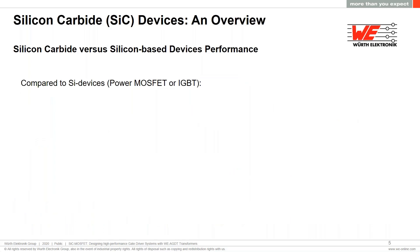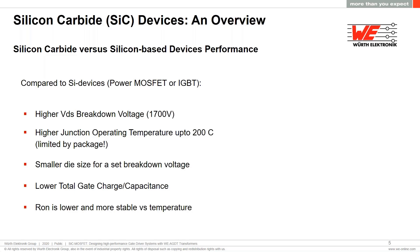How do these superior material properties translate into better semiconductor devices? Silicon carbide MOSFETs feature the highest breakdown voltages up to 1,700 V and are capable of operating at up to 200°C junction temperature. It is worth mentioning that this is limited by packaging — such as bonding material limits — not the semiconductor die itself, which could in fact operate at over 400°C. The die size is also smaller for a given breakdown voltage, which helps lower the total gate charge.